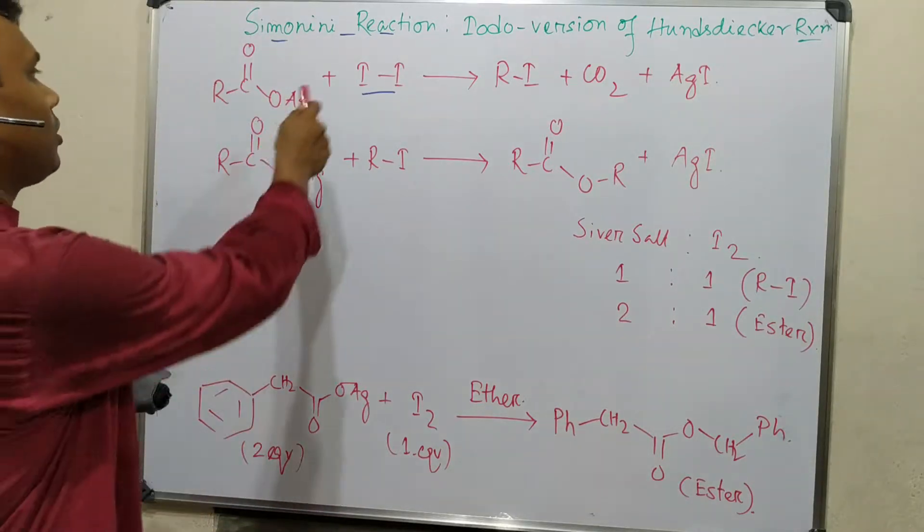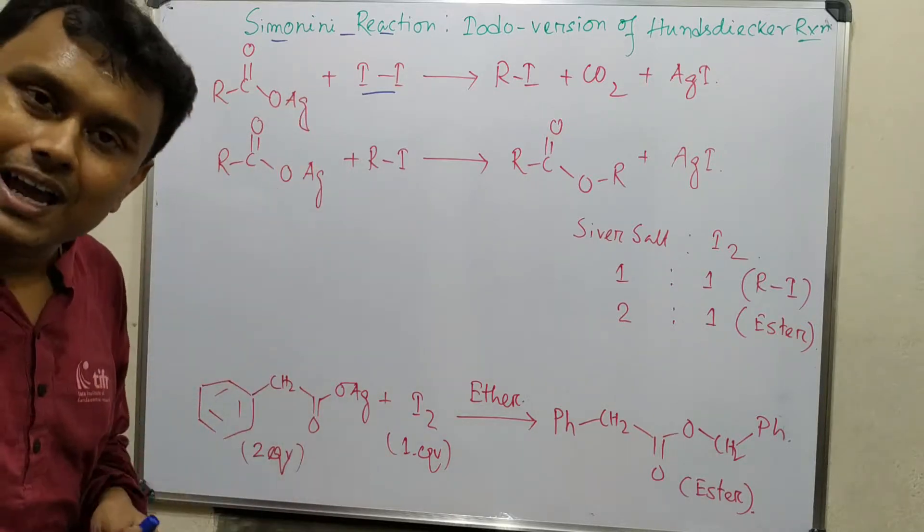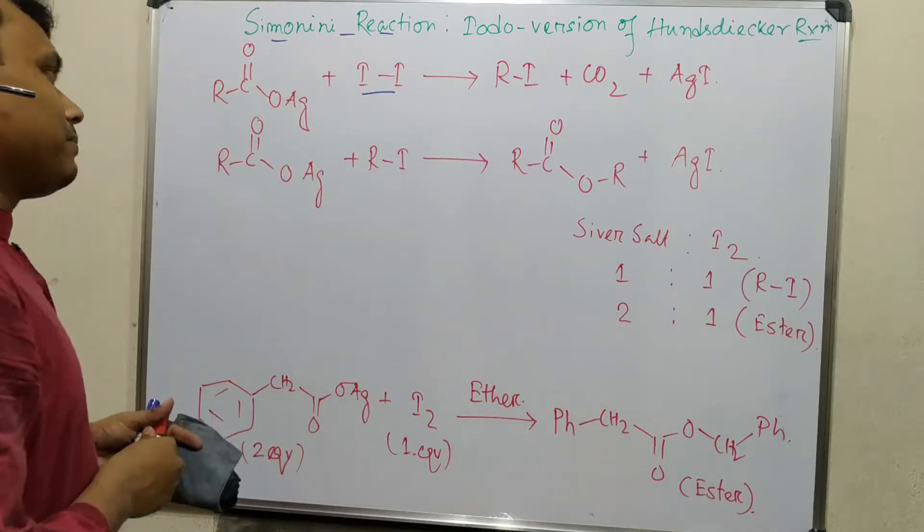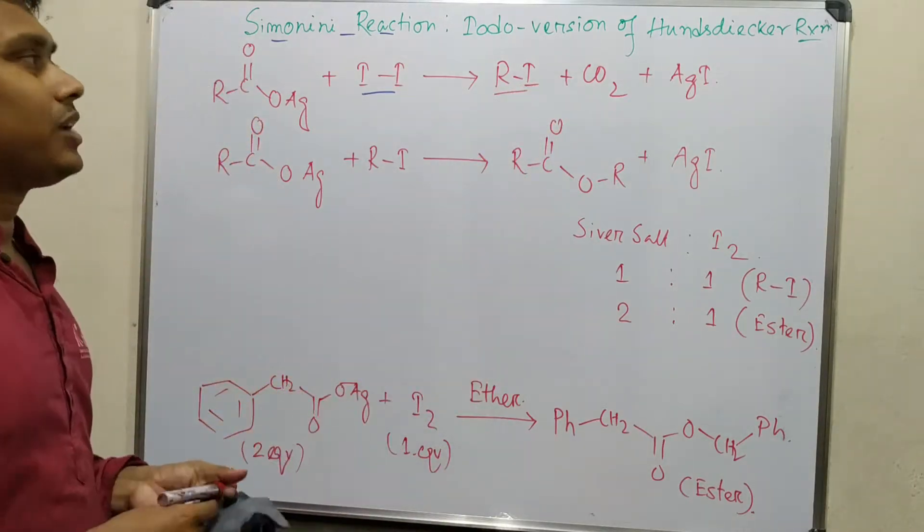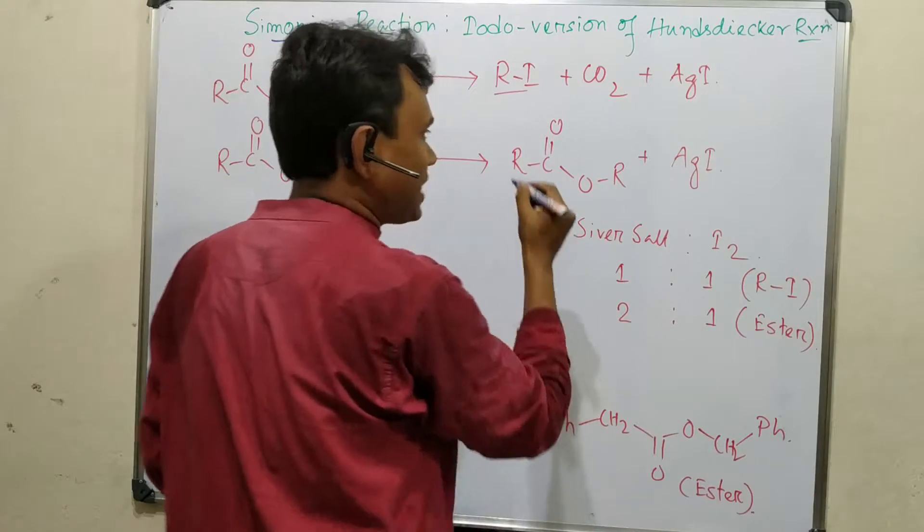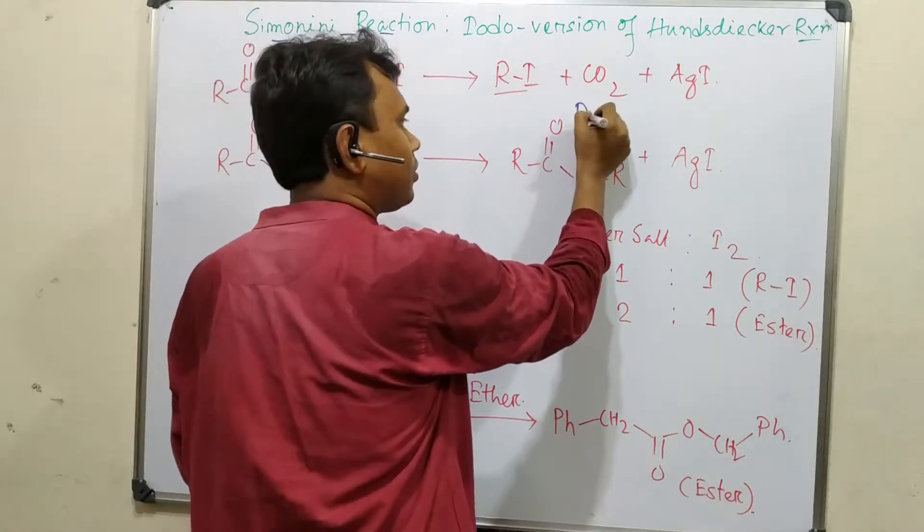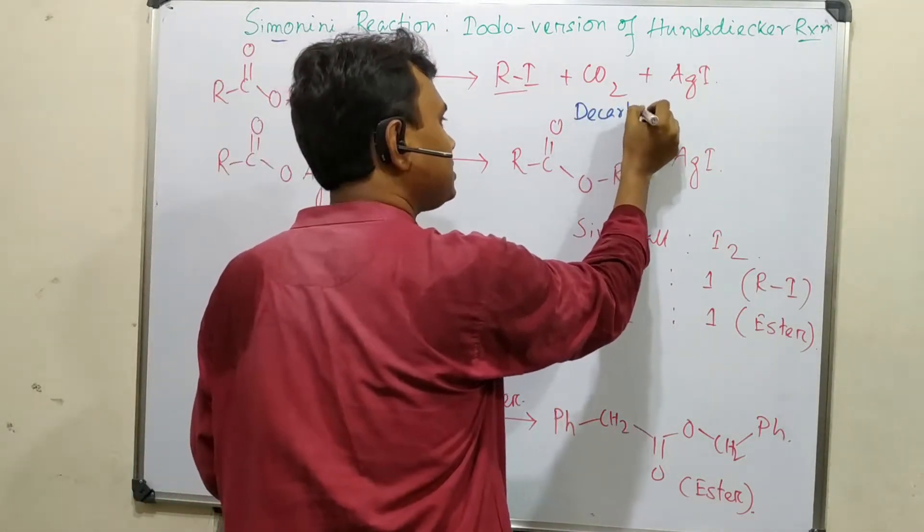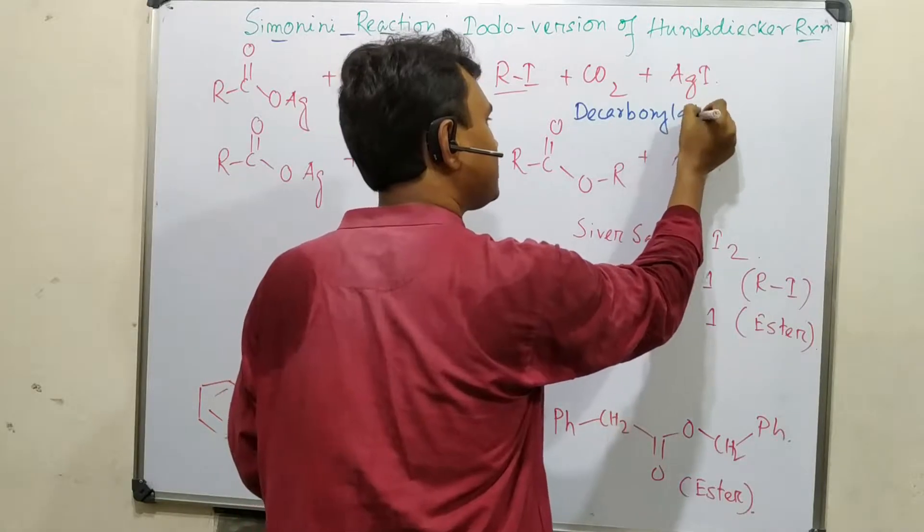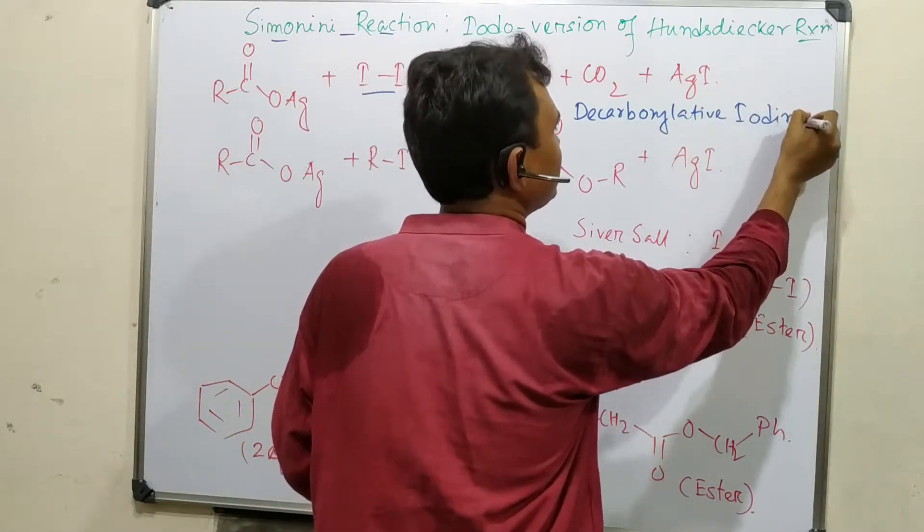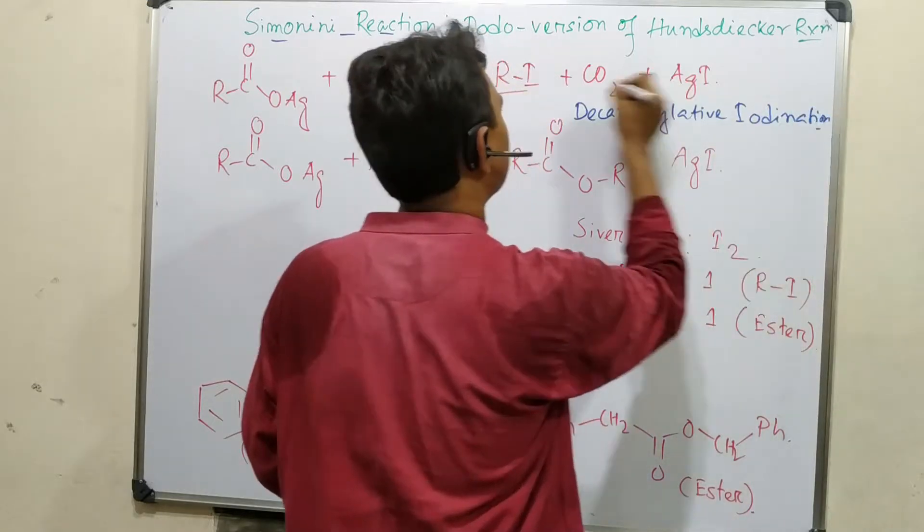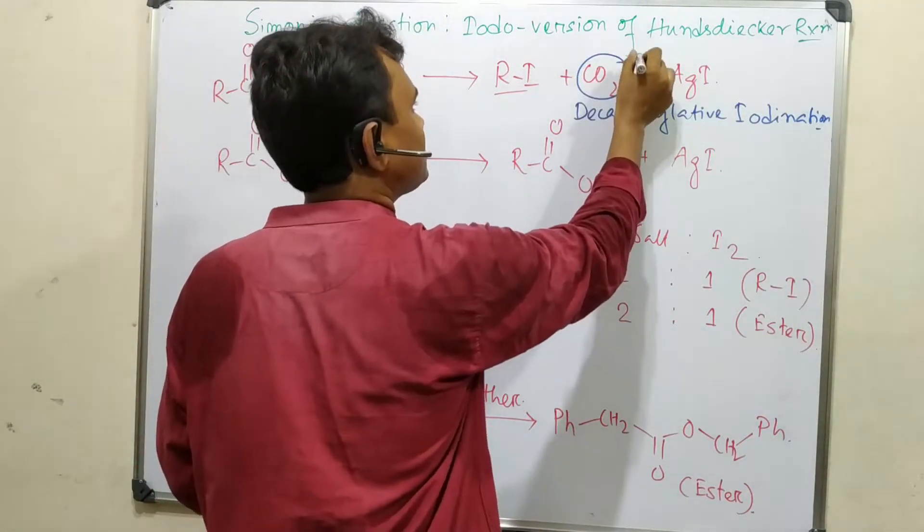What is this reaction? The silver salt of carboxylic acid reacts with iodine, a halogen, and produces alkyl iodide, carbon dioxide, and silver iodide. That's why this reaction is considered as decarboxylative iodination because iodine is attached to the final product and carbon dioxide is going outside.